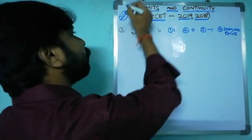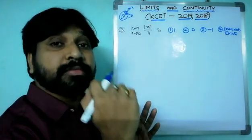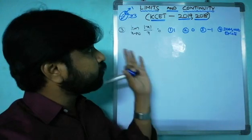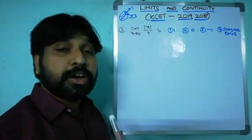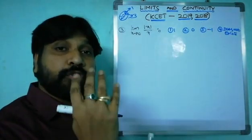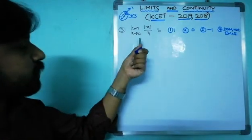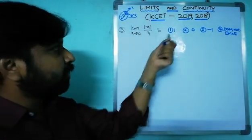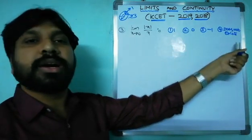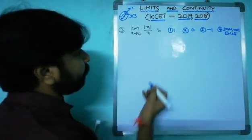For 2018 questions: one question from limits and three from continuity — four total. First question: limit x→0 of |x|/x. Is the result 1, 0, -1, or does it not exist?